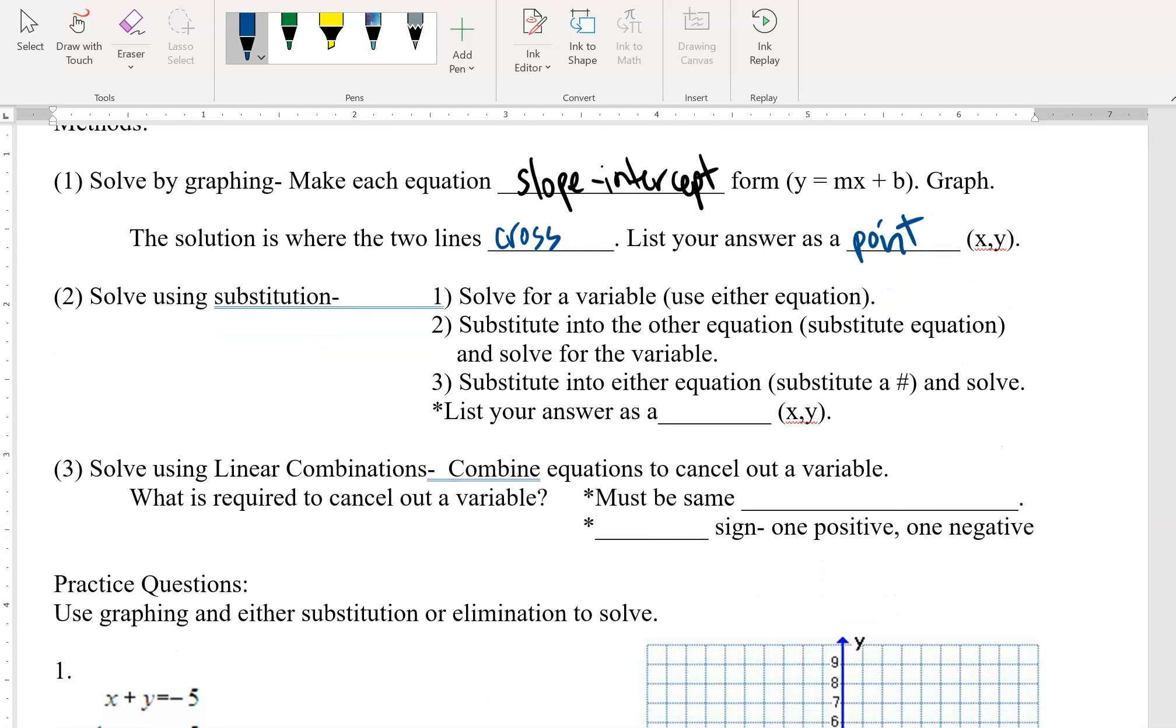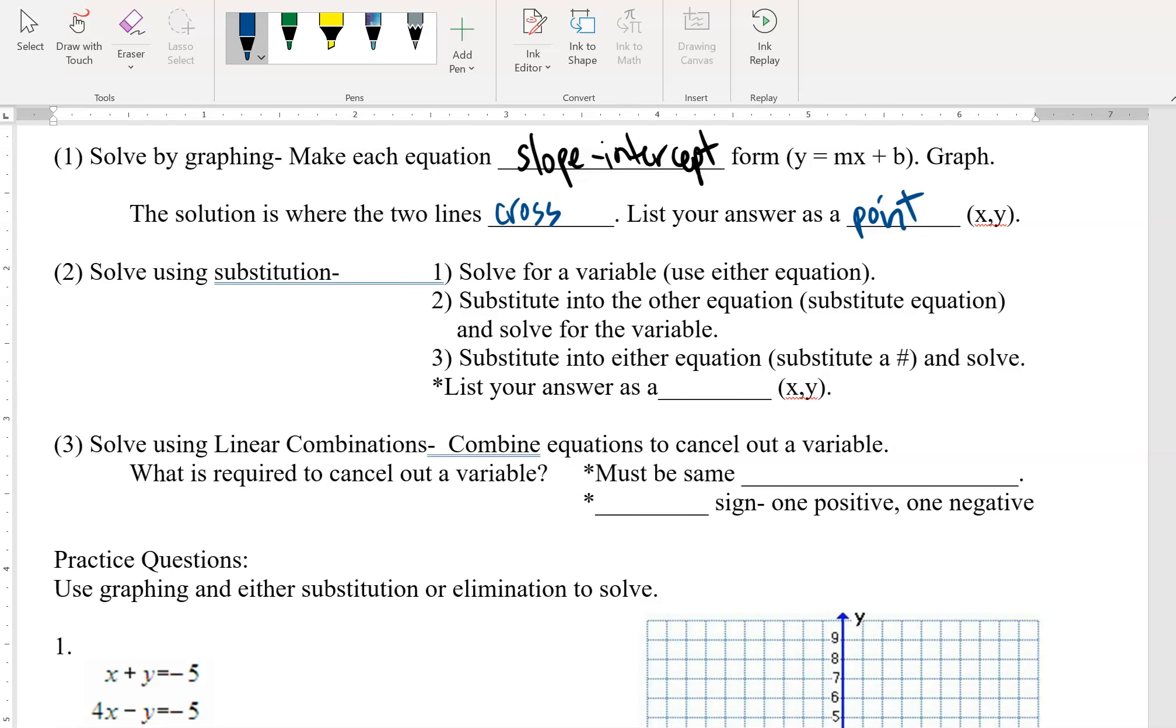Second method is substitution. So on this one we need to solve for a variable, either x equals or y equals. Generally I don't like to use substitution unless this step is already done. If I don't already have an x equals or y equals I generally would like to use method three. But still there are times where substitution might be easier. You might be more comfortable with substitution.